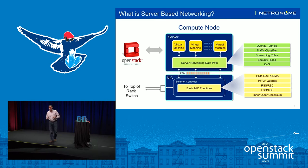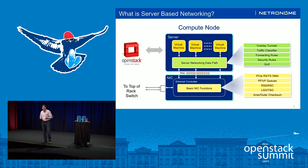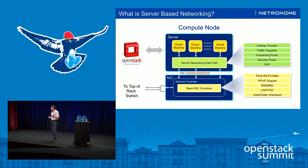Other things that can be done are more complex traffic classification for policy-based forwarding and also security policy — both stateless and stateful — implemented in the server-based networking data path. And finally, things such as customer-based or workload-based QoS, metering, statistics, and stateful operations as well. This rich set of server-based networking data path functionality is critical to OpenStack clouds and today is commonly implemented in the server in software, either running in kernel space or in user space.